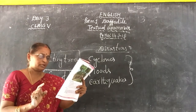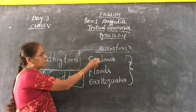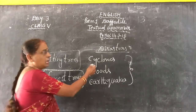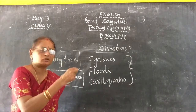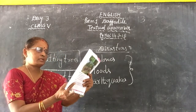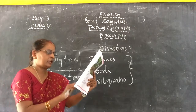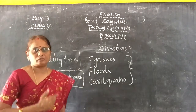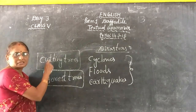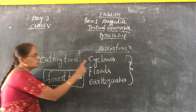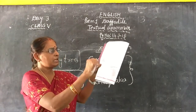Natural disasters cannot be controlled but they can be predicted at times. We can use precautions — broadcasting through loudspeakers, radio, TV channels, advising fishermen not to go far into the ocean. Man-made disasters, however, can be prevented altogether if human beings are more careful with how they treat their environment — our surrounding itself is called our environment.